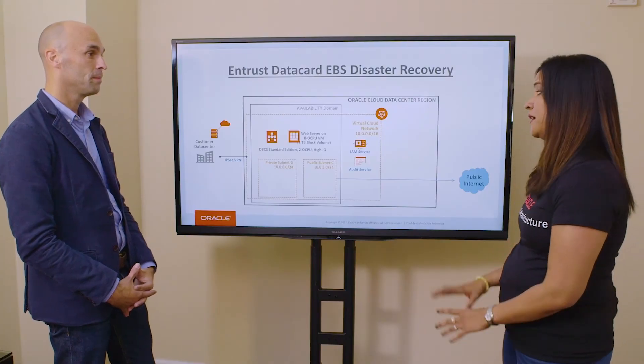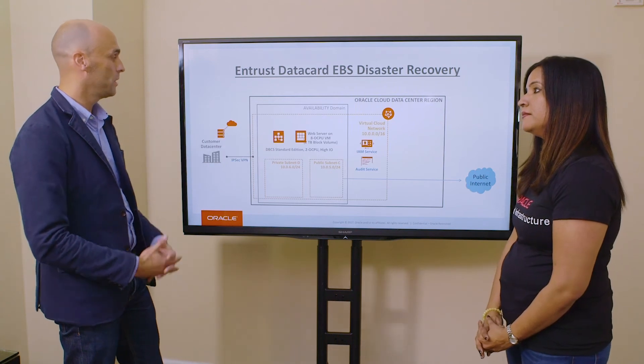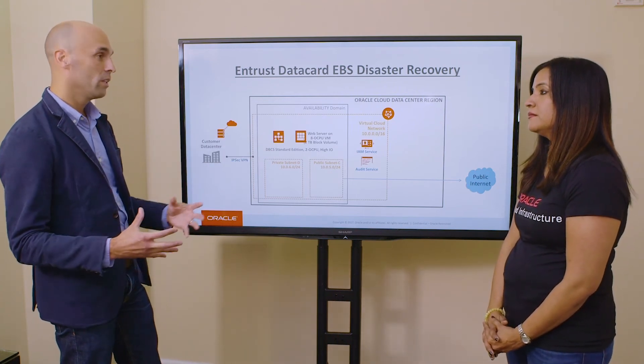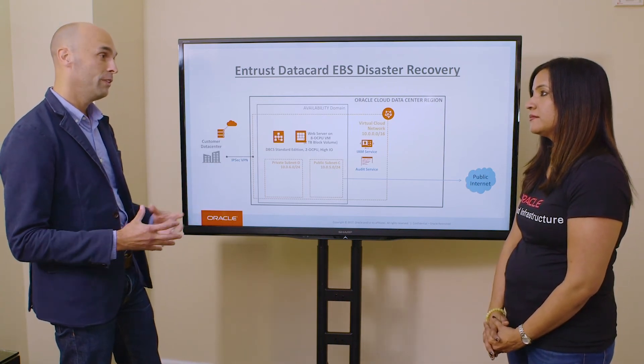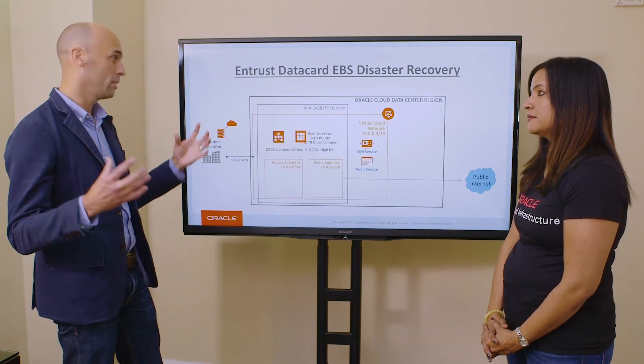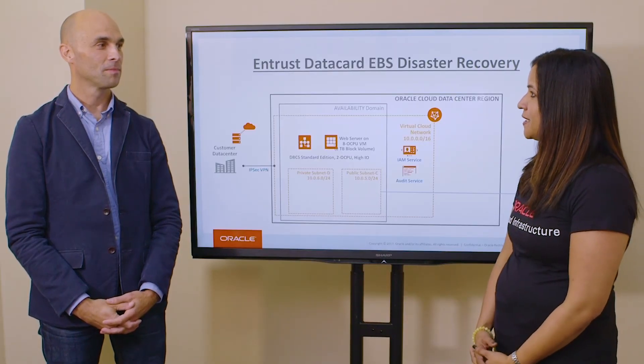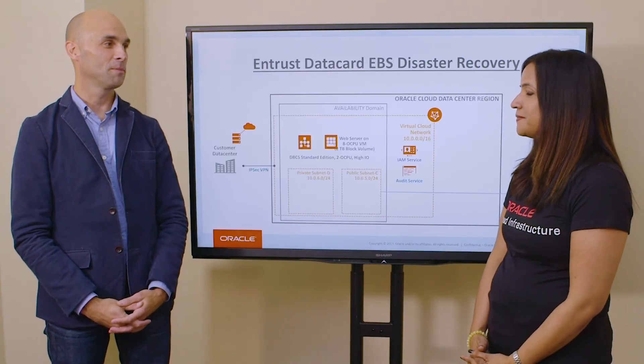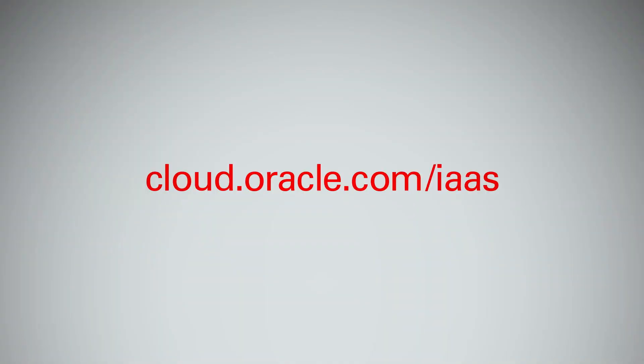Thank you, Jim. So now, in terms of the future application, can you tell us a little bit about how you're going to enhance this architecture? Sure. As I said, our implementation was quite small. One of the things we may do in the future is add another application server to create some load balancing, to make the solution even more robust than it already is. Thank you for sharing your story today with us, Jim. Thank you for having me, Shanta.